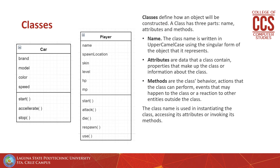Classes define how an object will be constructed. Here we have a class diagram. In a class diagram, classes are illustrated with a box. The first part of the box is the name — in this example, we have the car class.